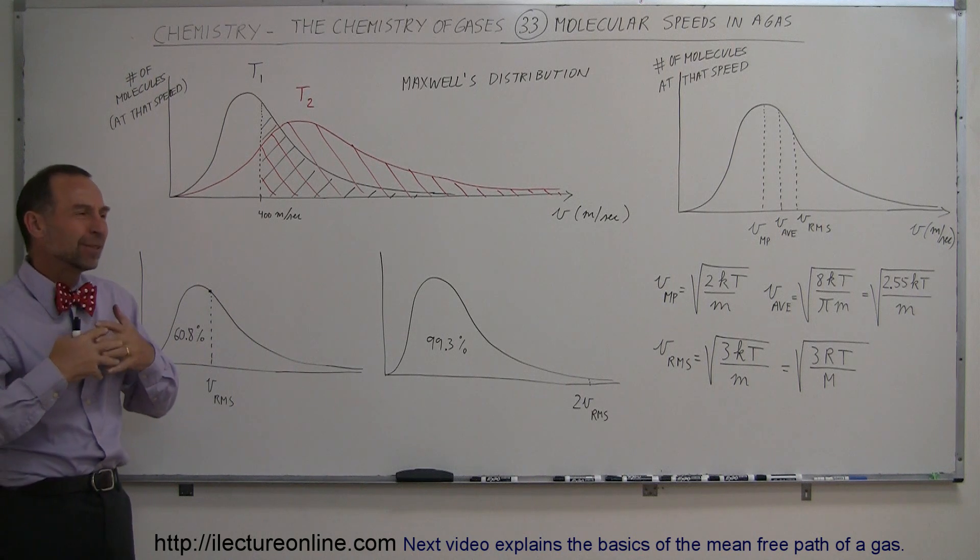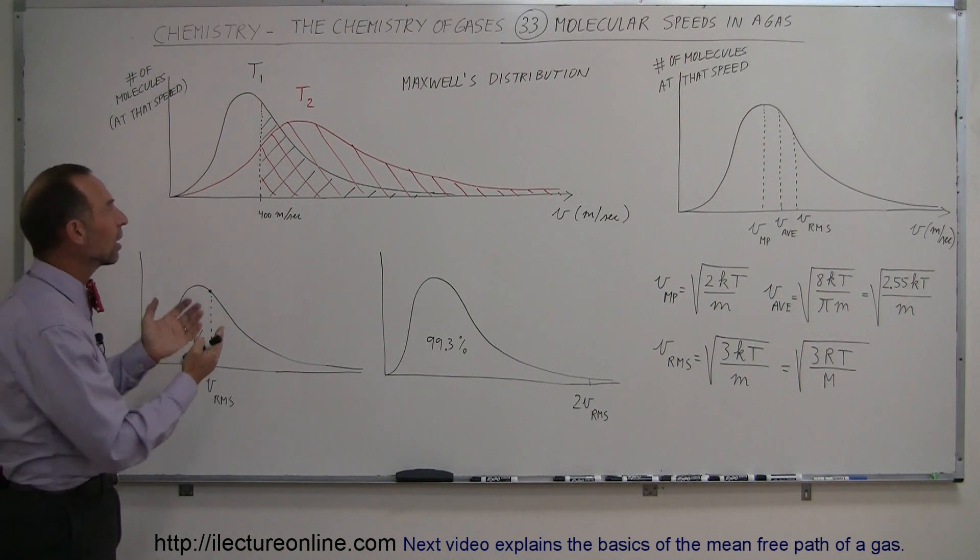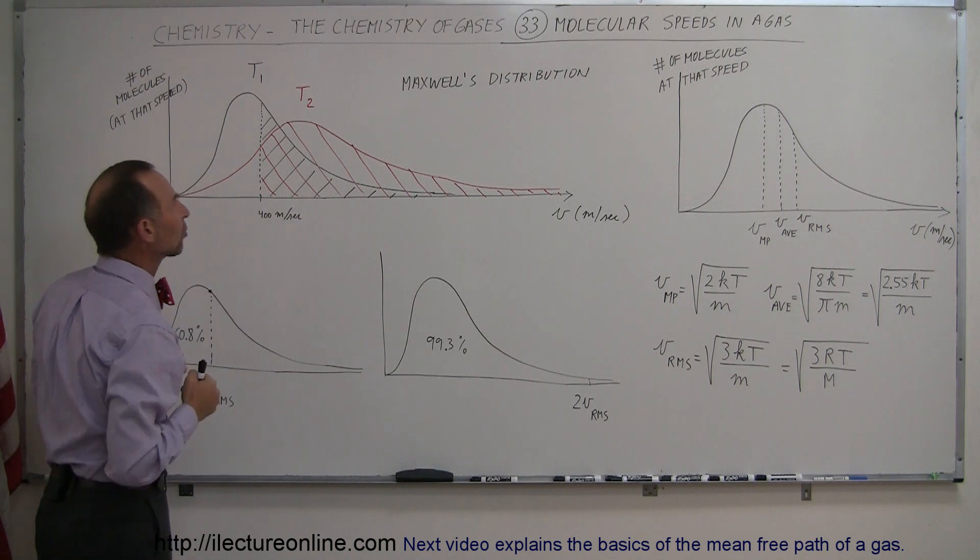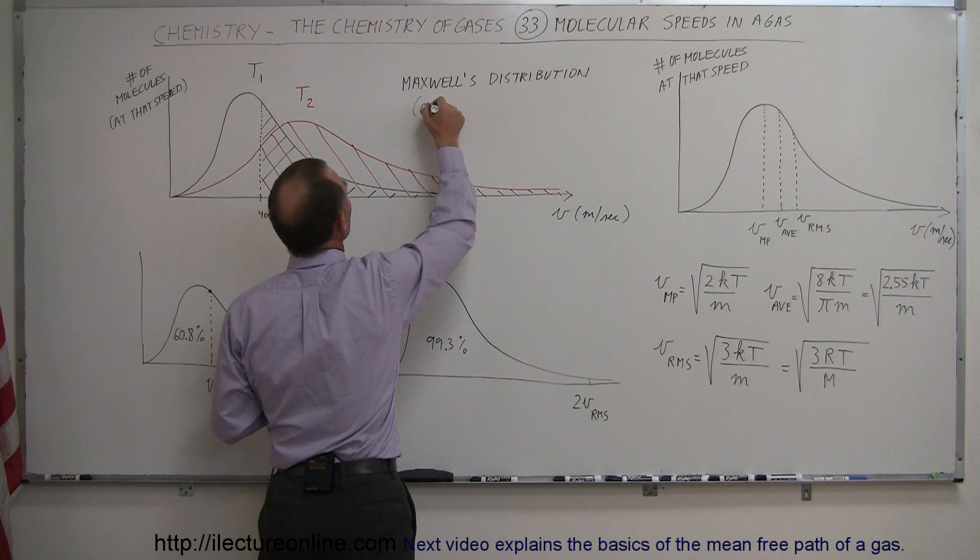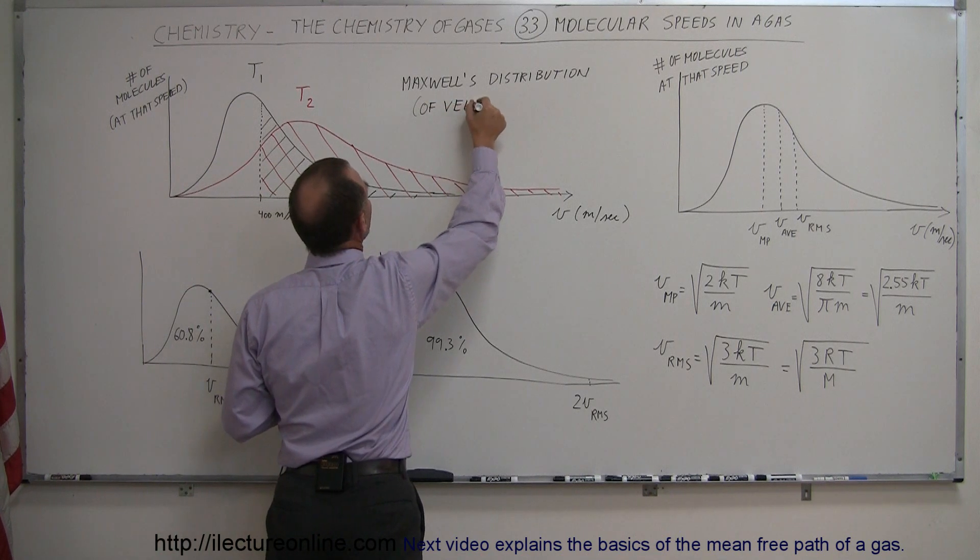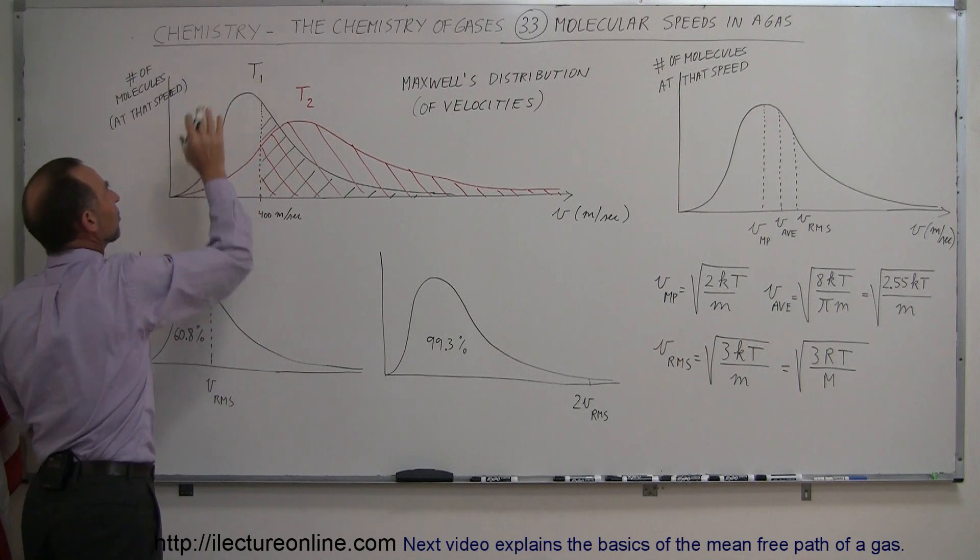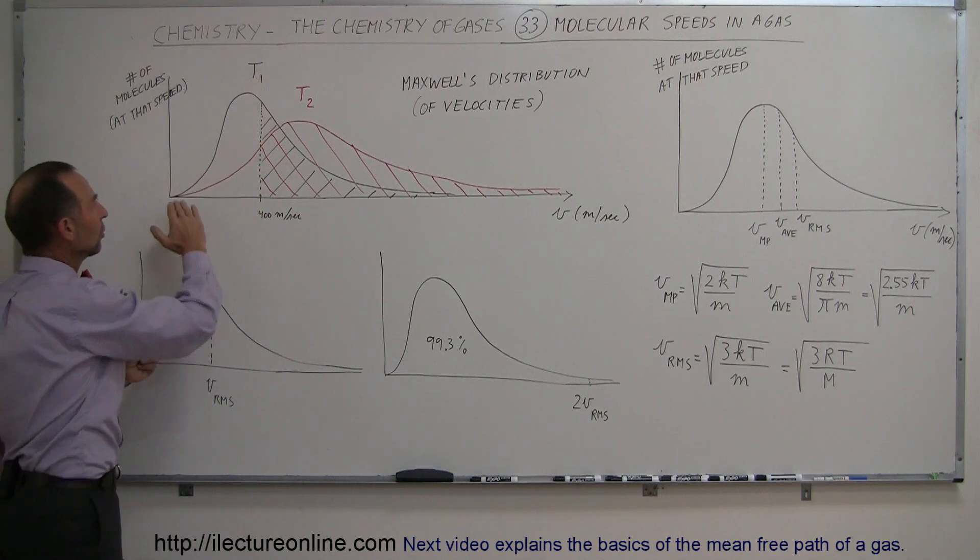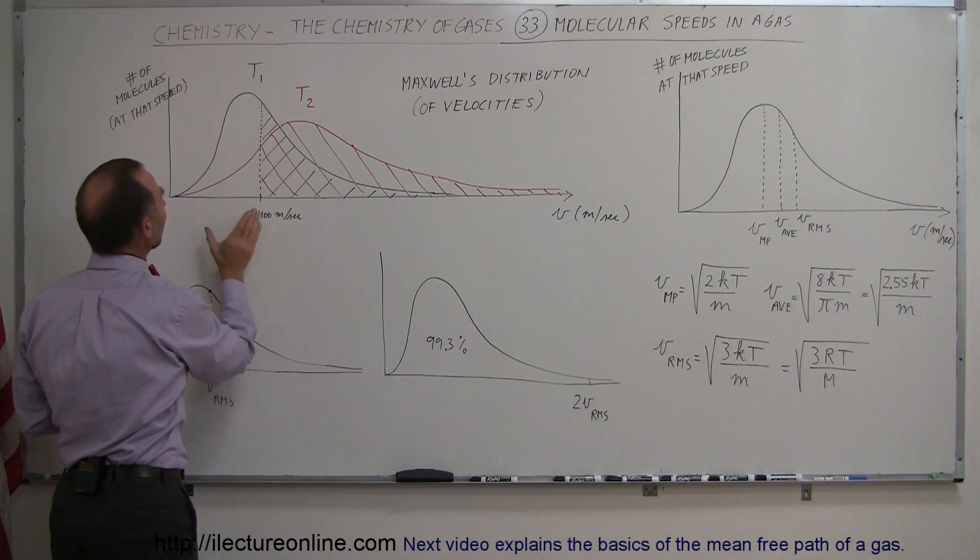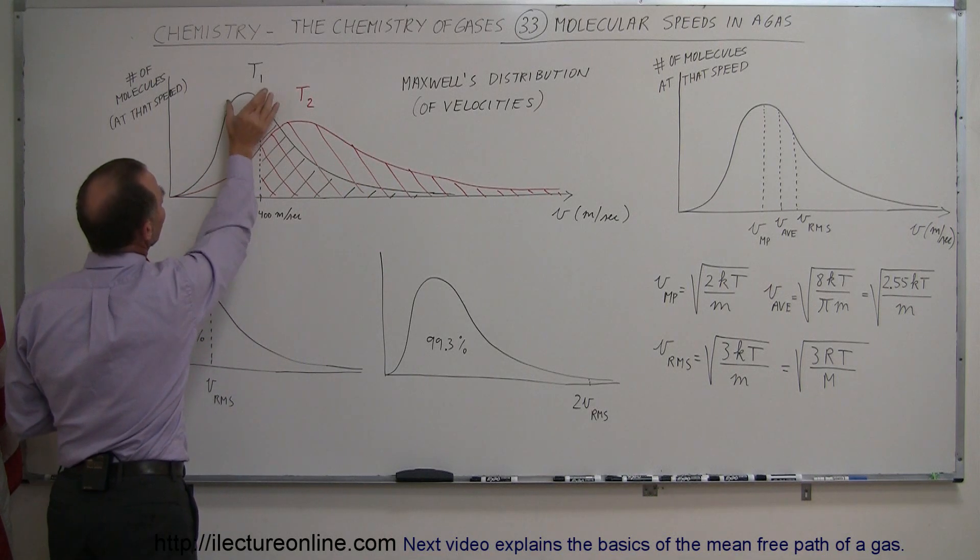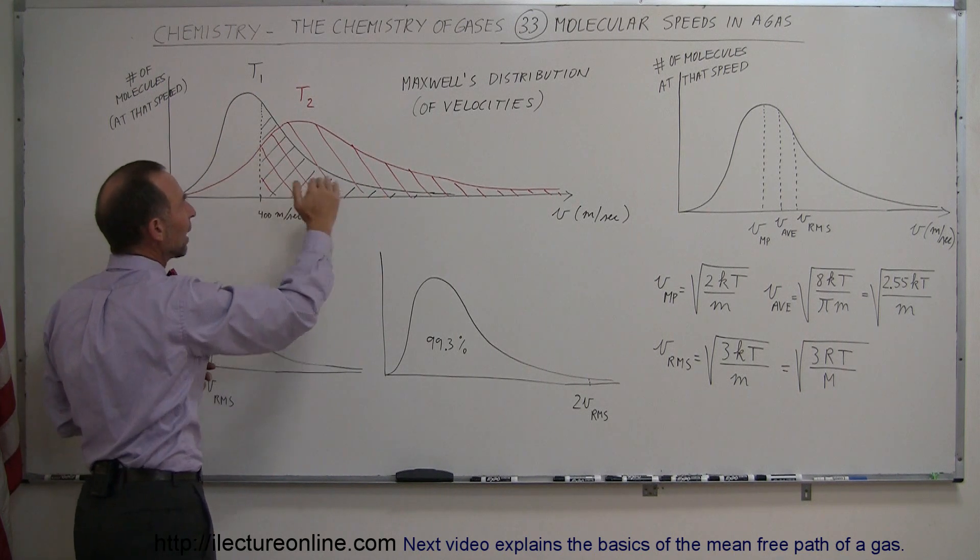All in all, they change speed and velocities as time goes on. If we want to take a look at the representation of how we talk about those speeds, we can talk about it in terms of what we call Maxwell's distribution of velocities. Let's say we have a gas in a container at a particular temperature T1. The black line here represents the distribution of velocities. Notice that most molecules travel about this fast, some travel faster, some travel slower.